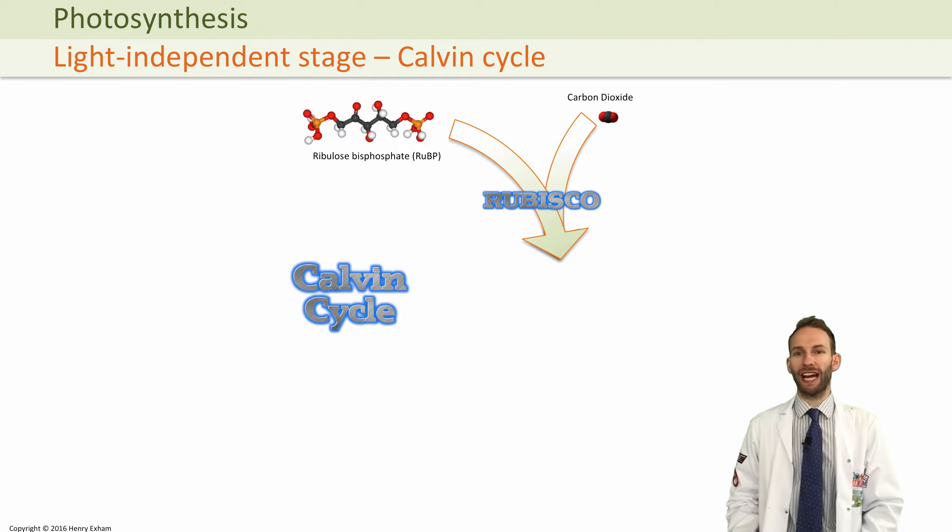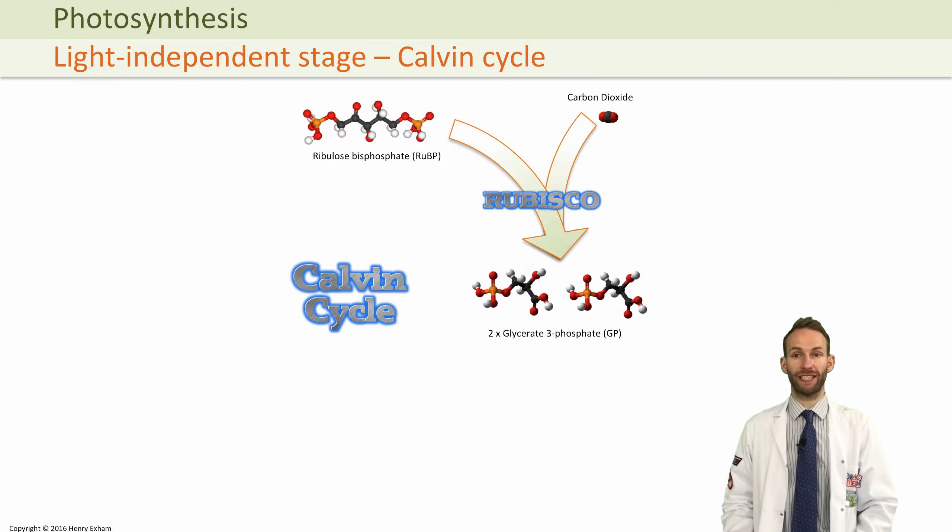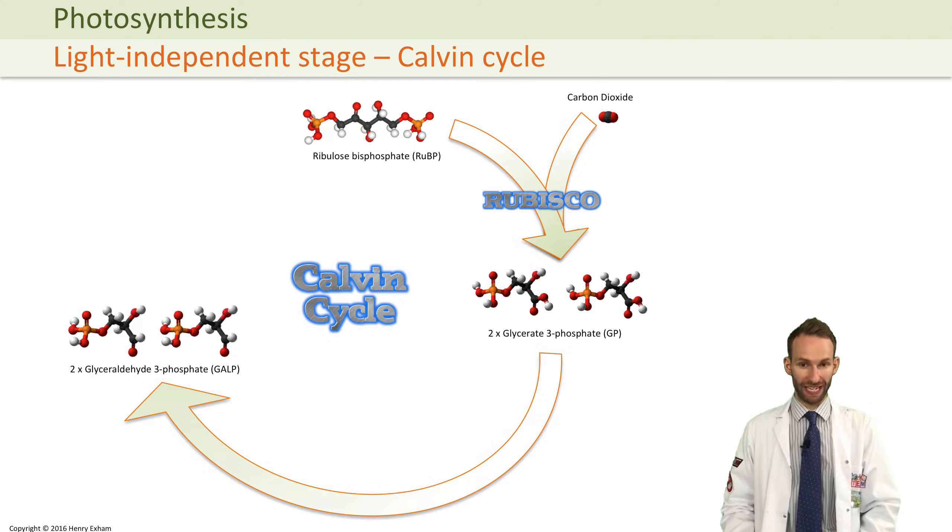This makes a six-carbon molecule, but that six-carbon molecule pretty much instantly breaks down into two three-carbon molecules called glycerate-3-phosphate, or GP. Now that GP can be further converted into glyceraldehyde-3-phosphate, or GALP.